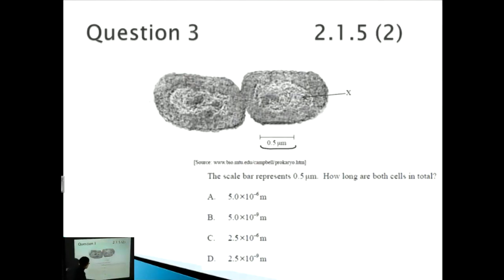Let's look at question three now. The scale bar here represents 0.5 micrometers. How long are both cells in total? Fairly easy question, but let's just make sure. It talks about how long are both cells, not just one of the cells.